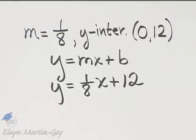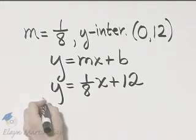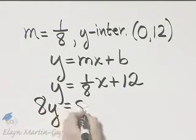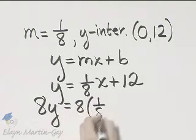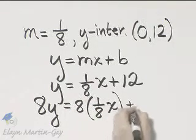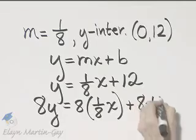Now, let's write this in standard form. I'm going to multiply through by 8, so that'll be 8y is equal to 8 times one-eighth x plus 8 times 12.